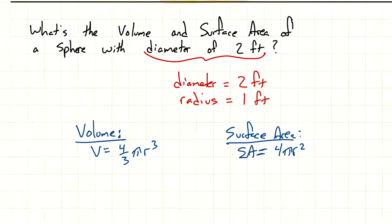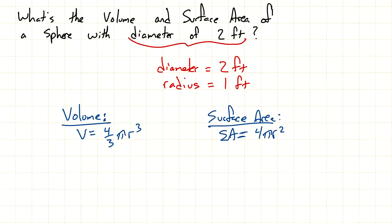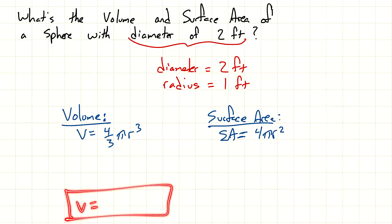I'm not going to set it up for you, but I want you to tell me the final answer. Final answer for volume — leave your answer in terms of pi, don't forget your units, and it's okay to have fractions in your answer. No decimals.